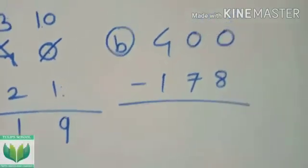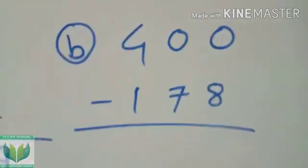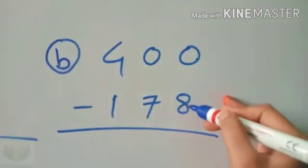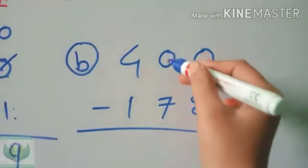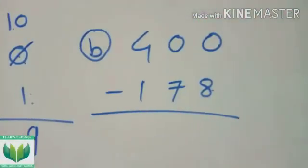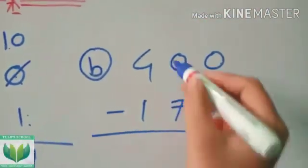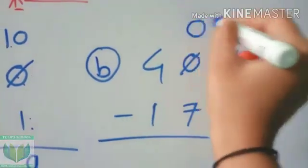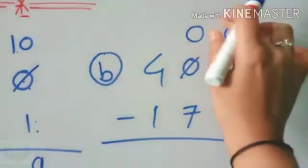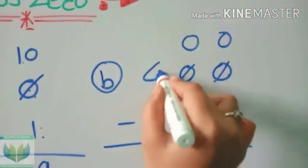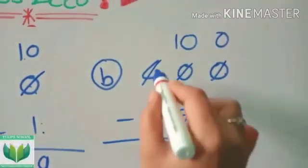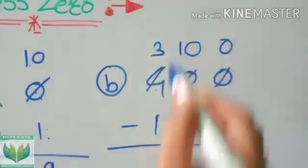Now again, across-zero subtraction. 0 minus 8 is not going, 0 minus 7 is also not going, and 4 minus 1. We have to cross this out and write upside. We have to take 1 from the 4 — here it becomes 10, and 4 becomes 3.